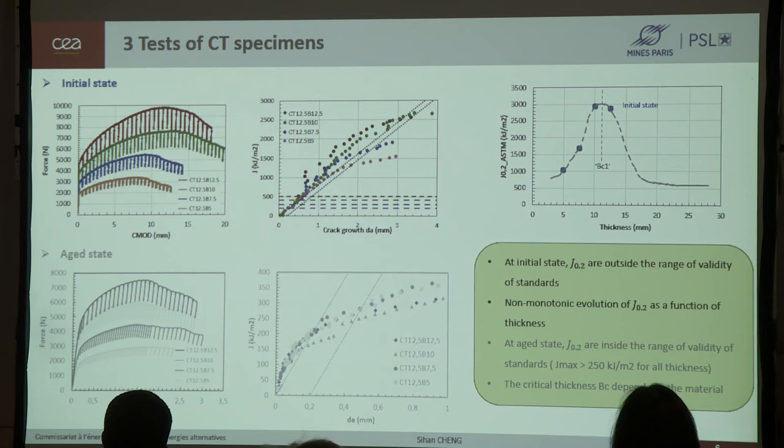Now, we move to the test of CT specimens. For experimental CT specimen, we used the elastic compliance method. That is to say, we estimated the crack length by compliance calculated in the partial unloading. In order to study the effect of thickness, the specimen CT12.5, whose nominal thickness is 12.5 mm, were tested. But its thickness varied from 12.5 to 5 mm. From the curve force and crack mouth opening displacement, we can see that when the thickness increase from 5 to 10, we have an increase of CMOD at the maximum force. But the CMOD at the maximum force decrease when the thickness increase from 10 to 12.5.